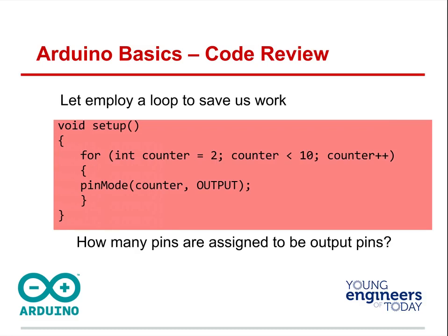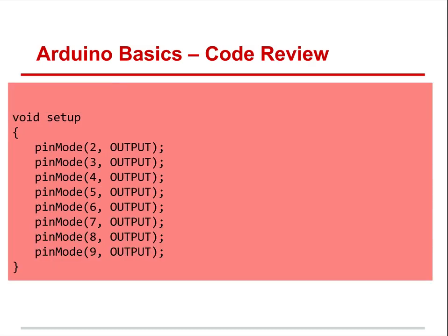Let's see how this saves us work. If you've hooked up your LEDs to pins two through nine, the for loop would start at two, run until it reached 10 — not doing it at 10 — and increase by one every time. So pin mode counter output: first time through, counter is two, so pin mode two is output. Then it increments to three, makes that an output, and keeps going through nine. It would not do 10. Compare this to manually writing pin mode for every pin — the for loop makes this so much faster.